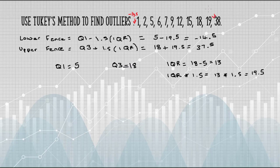Anything outside the fences is an outlier. For this data set, the only value that's an outlier is 38.